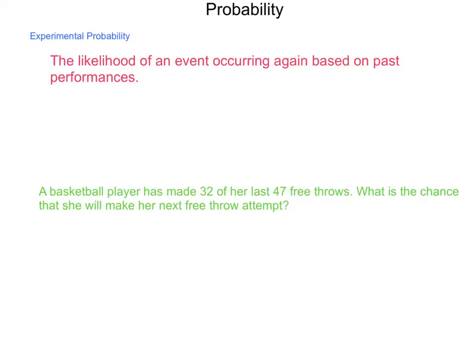Experimental probability is the likelihood of events occurring again based on past performance. Anytime we start talking about probability, we have a simple form of notation that we use. Probability is the probability of some event, I'm going to call E, is equal to...